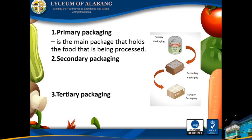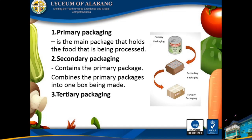Number two, secondary packaging. It contains the primary package and combines the primary package into one box. Secondary packaging is intended to protect not only the product but also the primary packaging, which often is the packaging most visible to the consumer in retail displays. The most common examples include cardboard cartons, cardboard boxes, and cardboard or plastic crates.